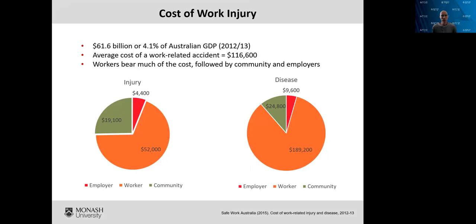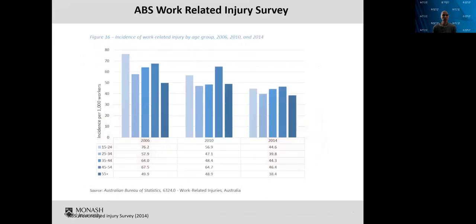Another estimate completed by Safe Work Australia estimates that the direct and indirect costs of just traumatic injury are about 4% of GDP every year, or over $60 billion, with most of that borne by workers and some by employers and the community. This is data from the Australian Bureau of Statistics Work-Related Injury Survey — I'm showing you this to illustrate the range of different data sources we have. It actually demonstrates a gradual reduction in people reporting injuries at work between 2006 and 2014.